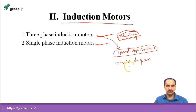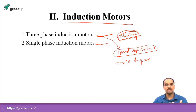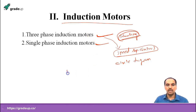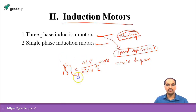From the circle diagram we can find mechanical power, how much loss is produced in the motor, and also rotor losses. Finally, if you know the input and the losses, you can calculate output. Output equals input minus losses divided by input — efficiency of the induction motor can be written in this way.